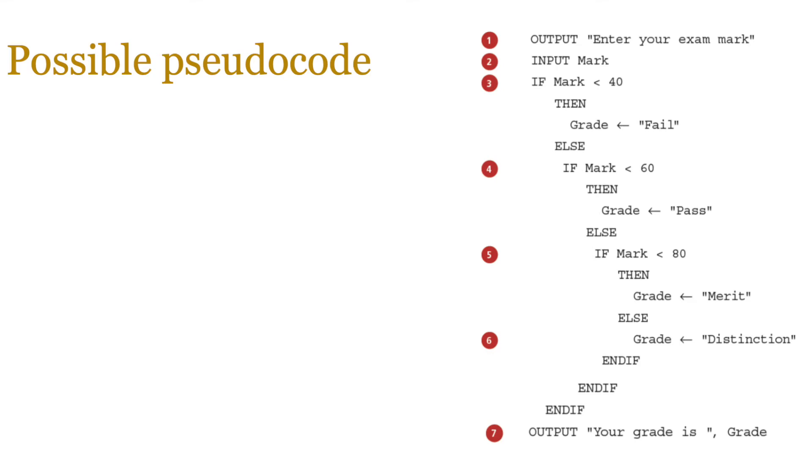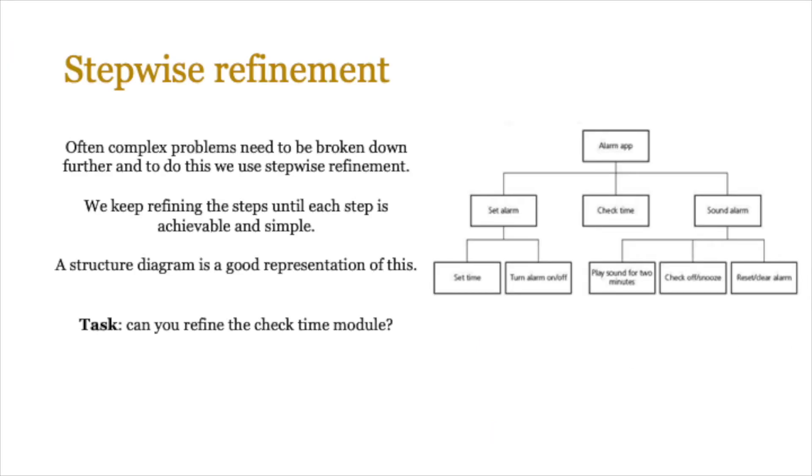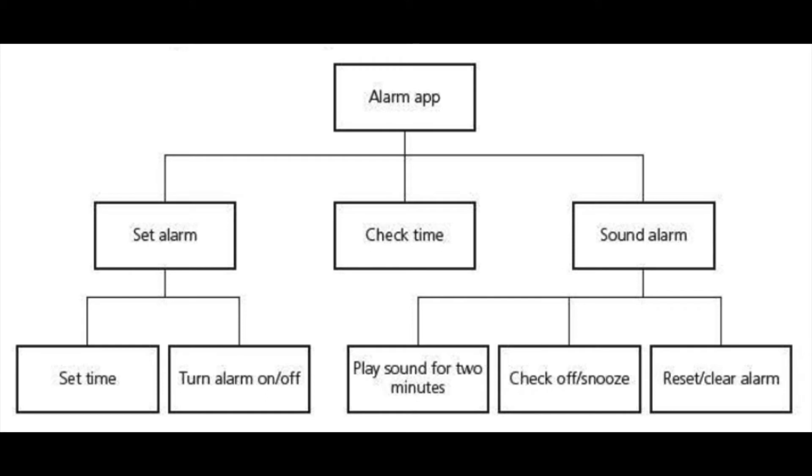Next up is stepwise refinement. So problems don't just automatically solve themselves. Often complex problems need to be broken down further. And to do this we use the technique called stepwise refinement. Normally what happens is you'll end up with an upside down tree or a hierarchical structure diagram like the one you see on screen. And we keep refining every step until each step is achievable and simple.